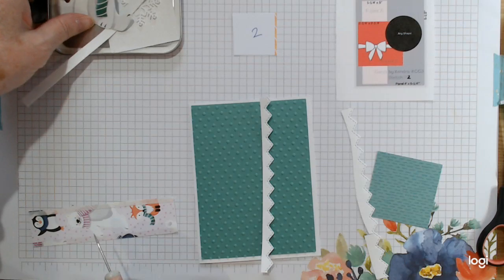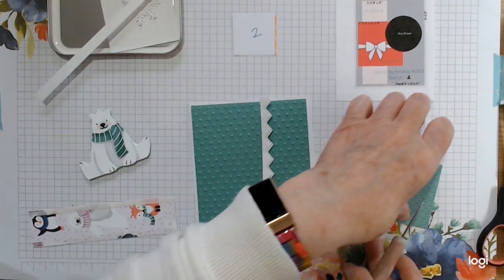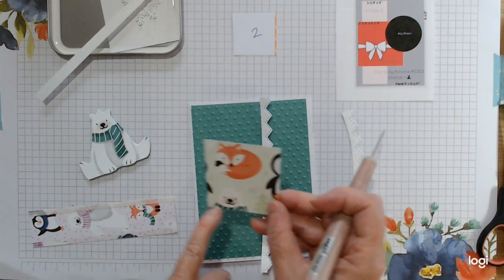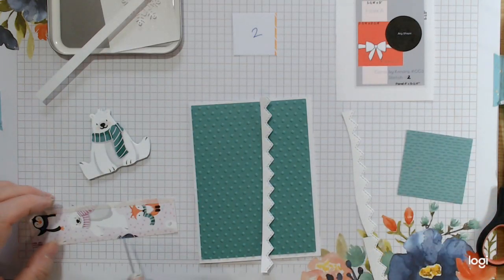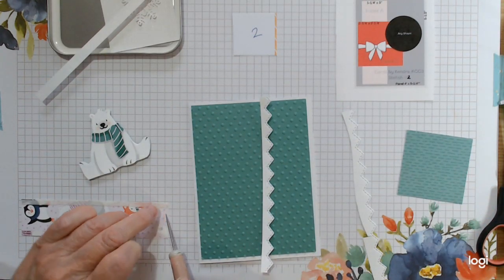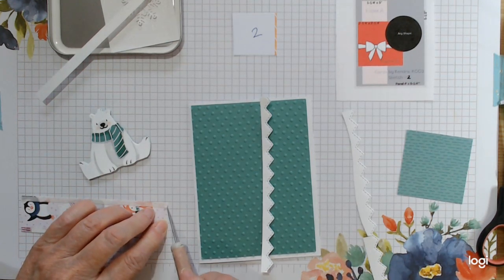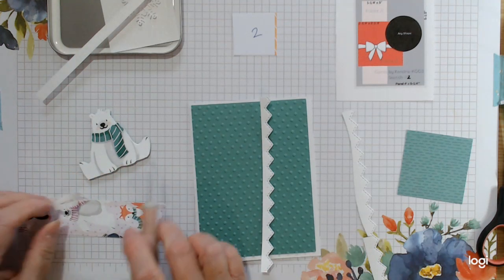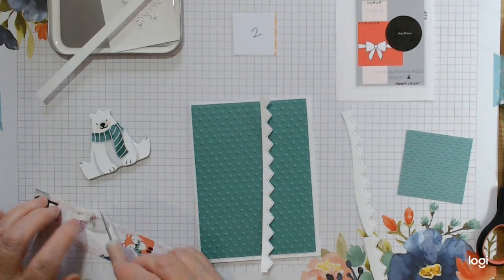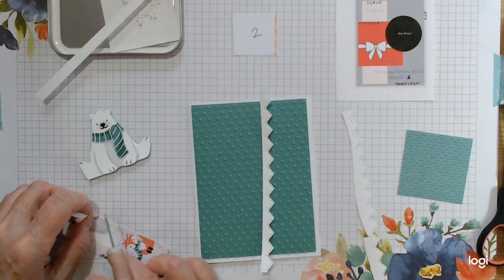My polar bear as you can see has come from the back of one of the paper series, the top of them there, so I've just cut him out of an extra bit of paper and I'm going to use him as an image.